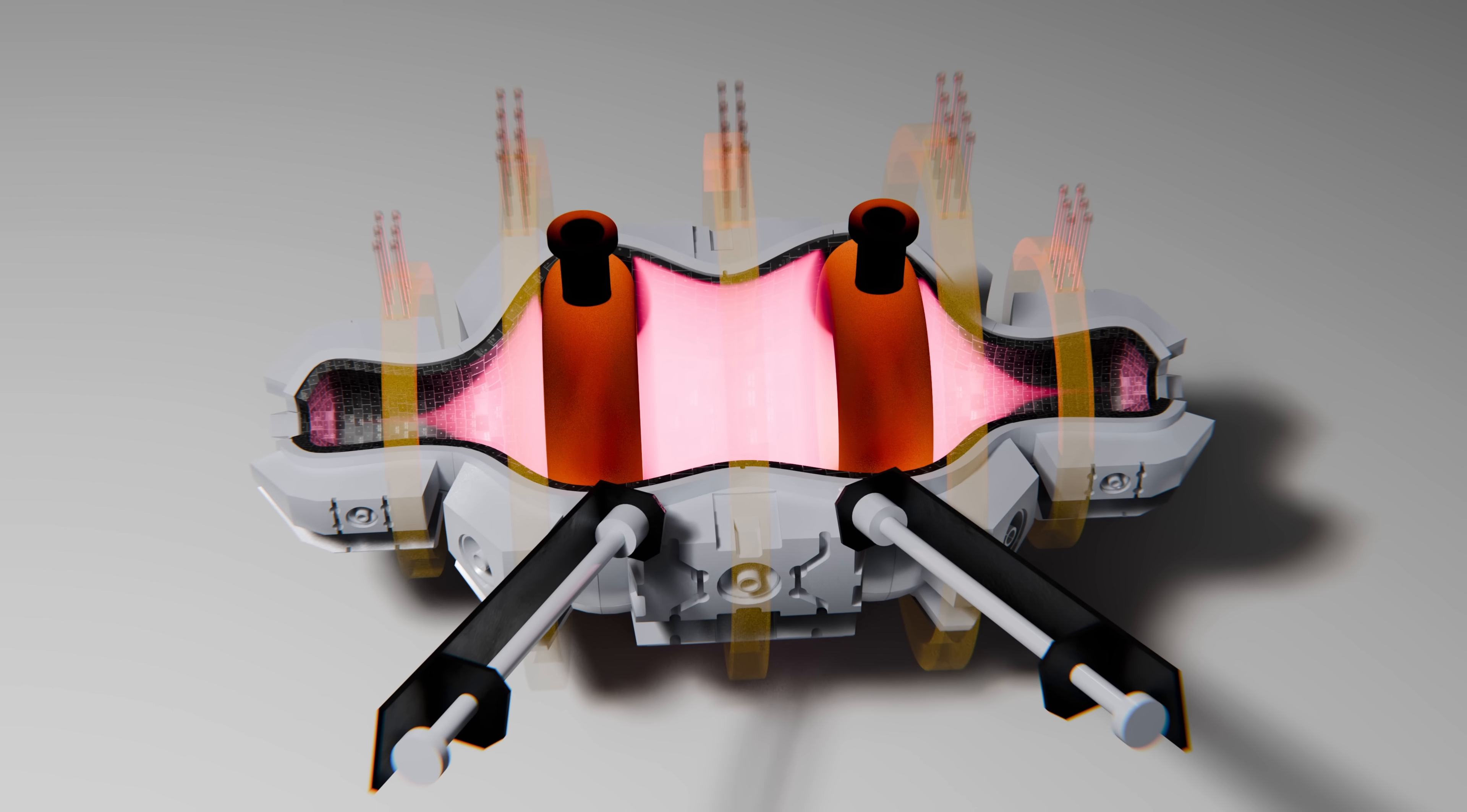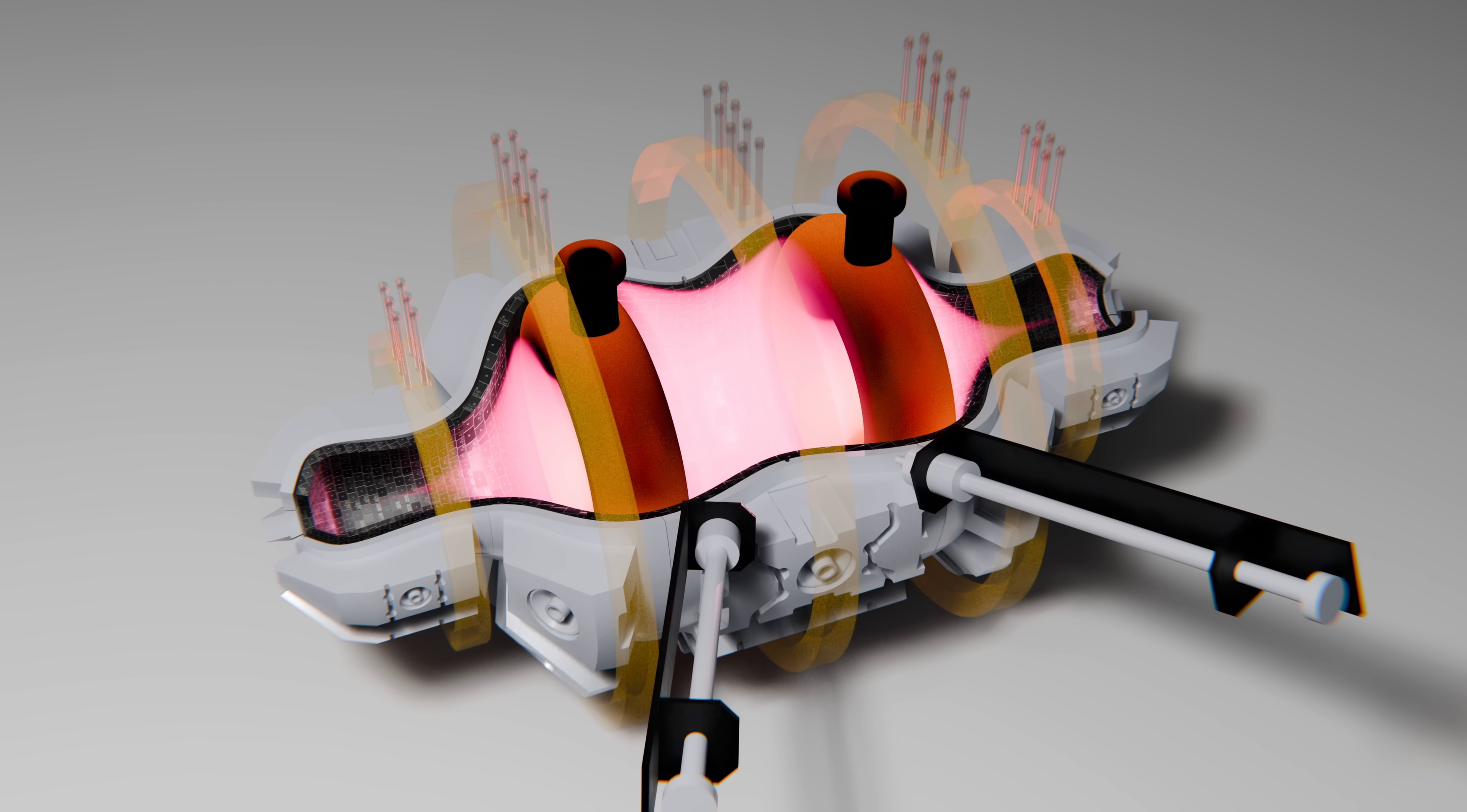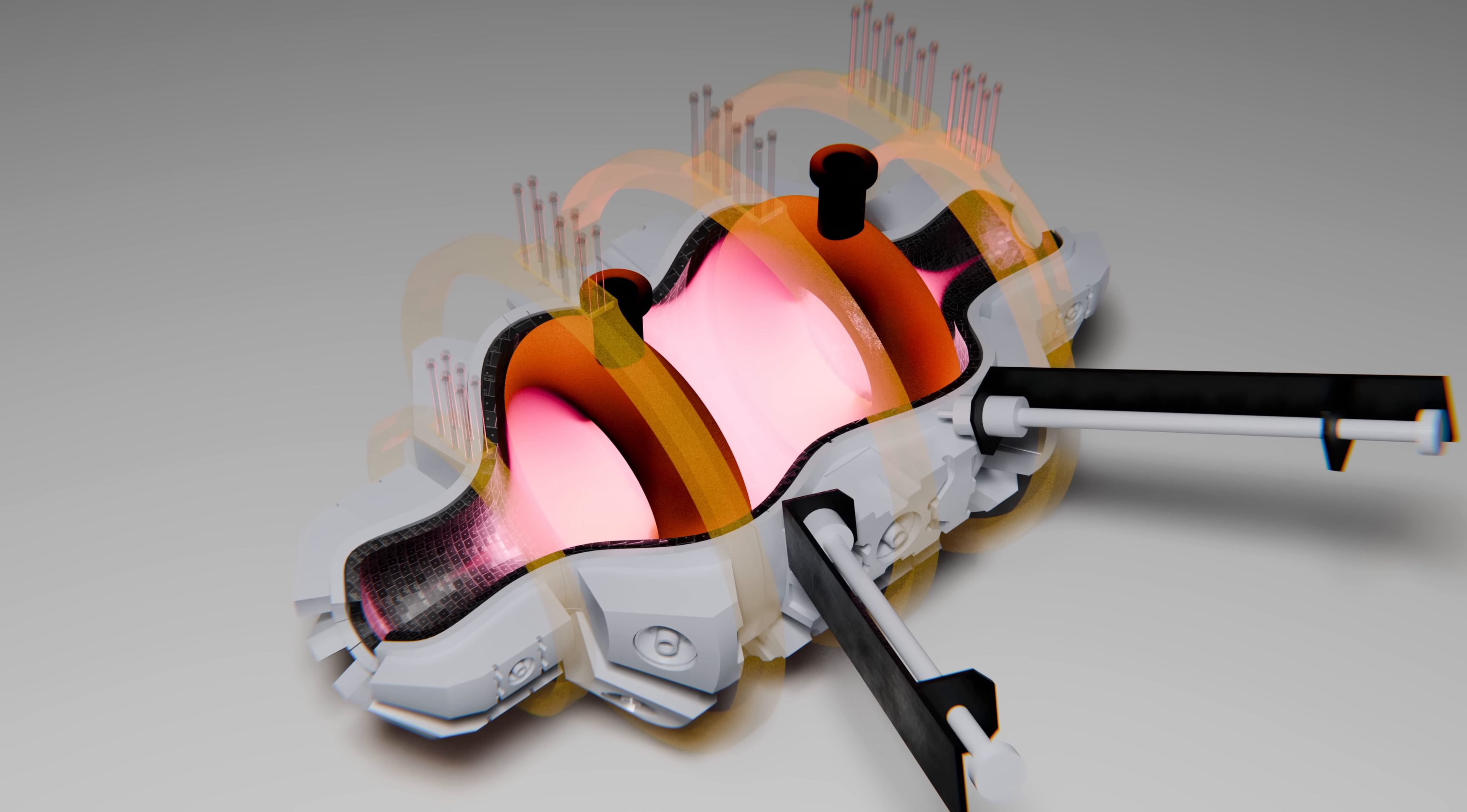To get fusion going, the CFR would inject a mix of deuterium and tritium into the chamber and heat it over 100 million degrees Celsius. They planned to use neutral beam injection, firing high-energy atoms into the plasma, which would transfer their energy through collisions, raising the temperature to fusion levels.